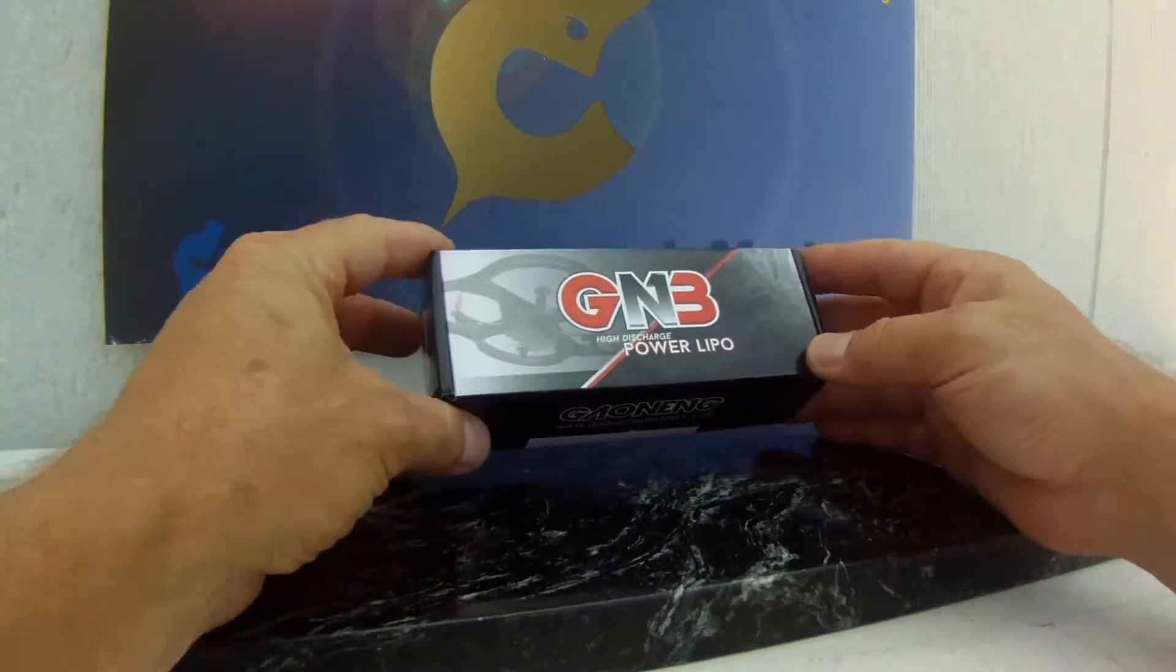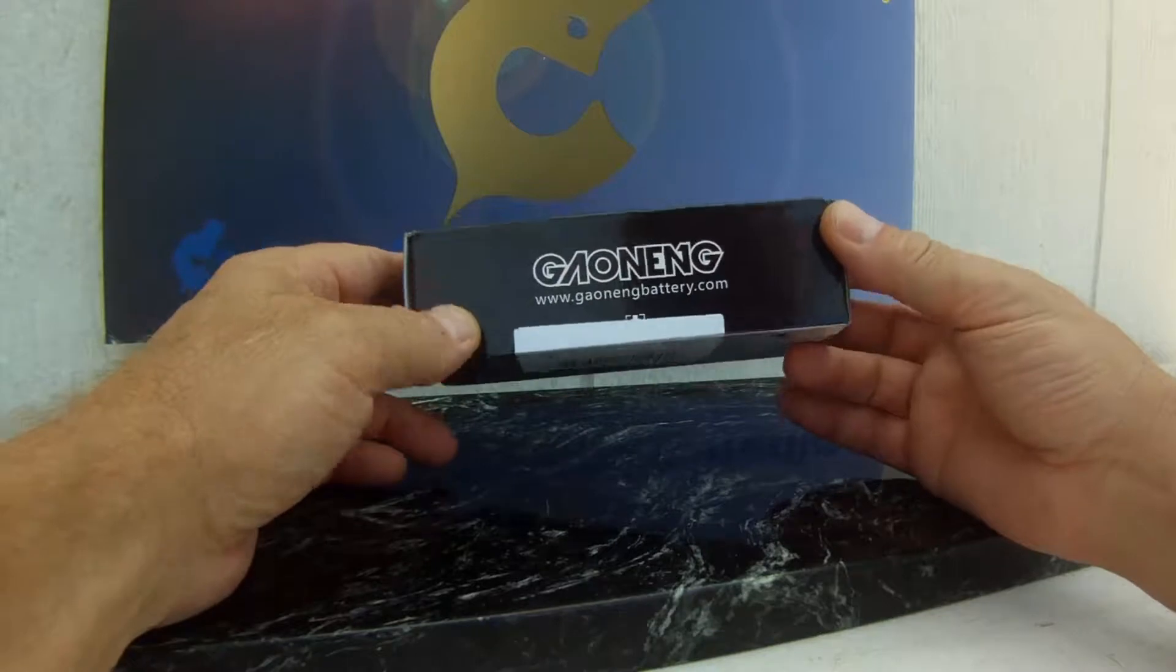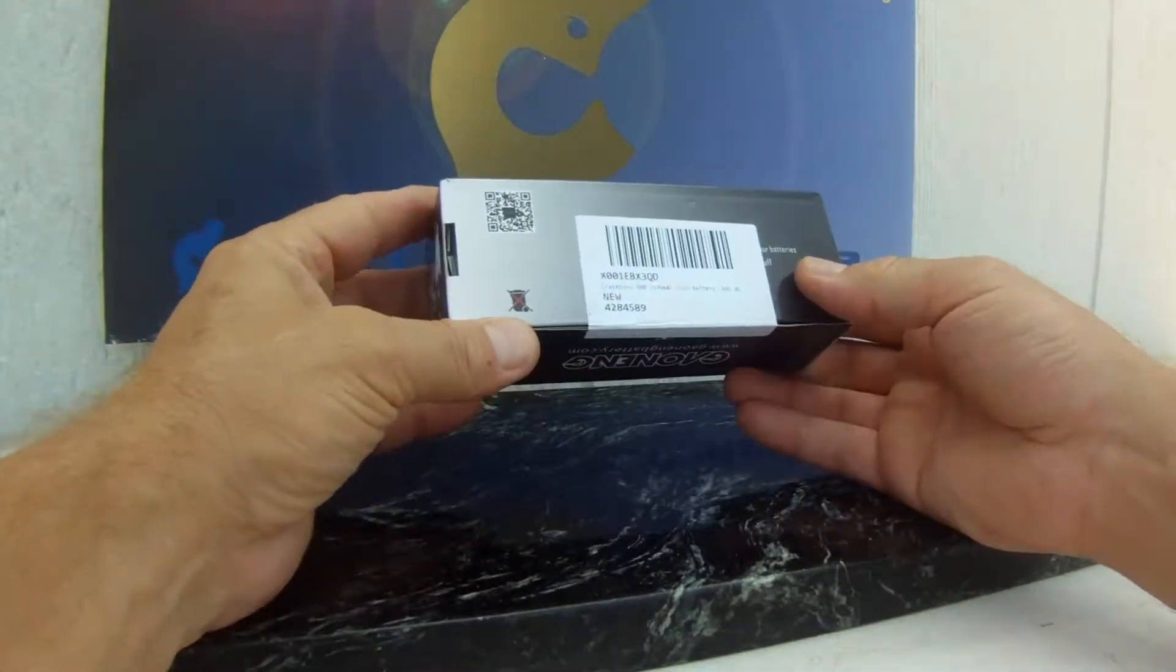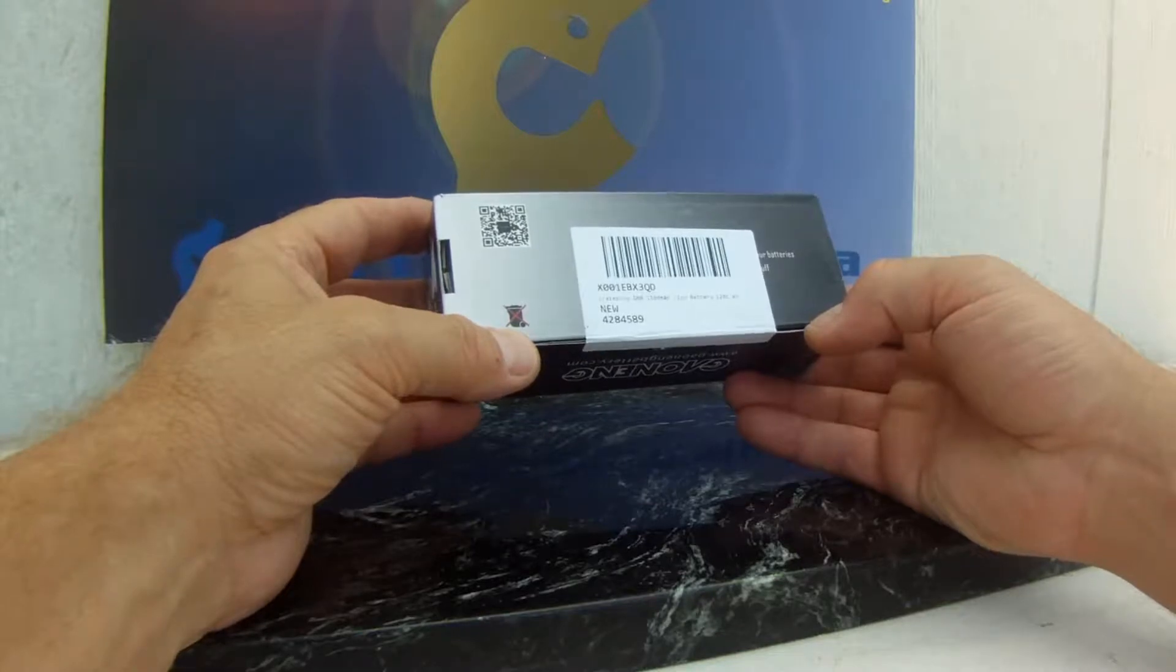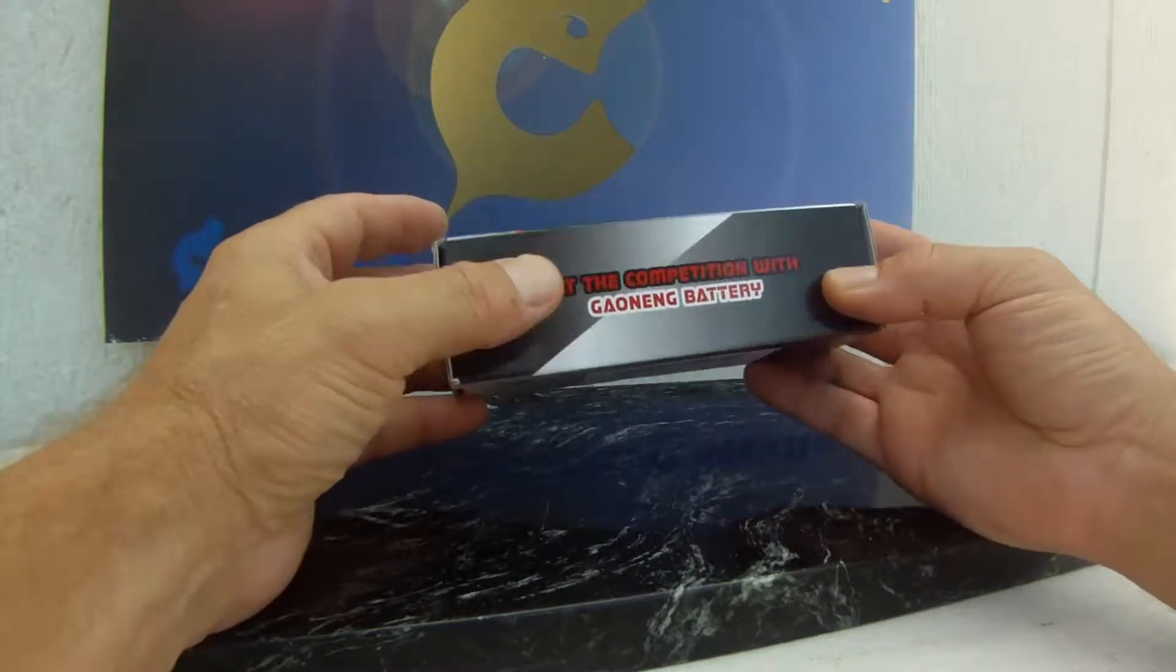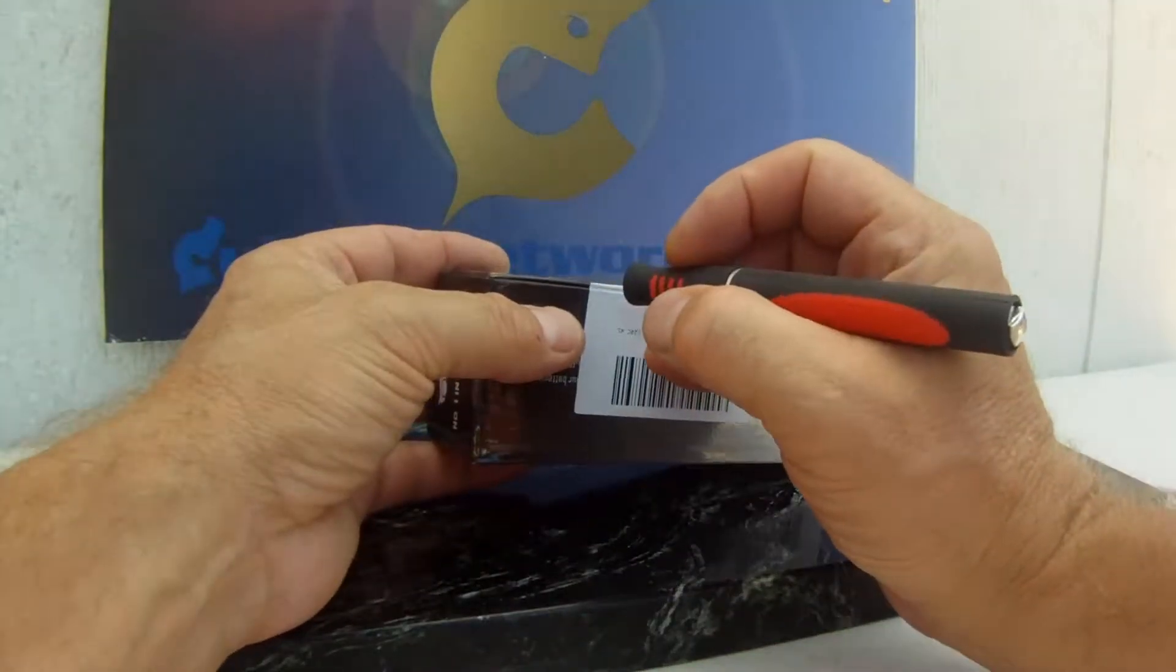This is a 1,500 milliamp 4S LiPo from Crazy Pony. I'm going to put it in a new drone that we've got that might be able to handle it. It's definitely 4S capacity. This is 120C, so it's going to have some serious punch. Anyway, let's go ahead and open up this bad boy and see what we've got.